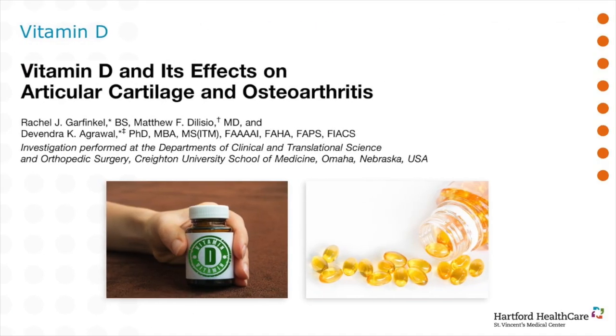Vitamin D deficiency affects about 42% of Americans and is more prevalent in higher latitudes like Connecticut where people remain indoors more often and lack sunlight exposure necessary to convert vitamin D to its active form. Laboratory studies have demonstrated that vitamin D has a role in decreasing inflammatory response of the immune system and that receptors for vitamin D are increased inside cartilage cells with osteoarthritis. Clinical studies have demonstrated that vitamin D deficiency poses a risk for osteoarthritis and those patients with decreased cartilage thickness are more likely to be vitamin D deficient. However, the role of vitamin D supplementation in the treatment or prevention of osteoarthritis remains unclear and more research is required.